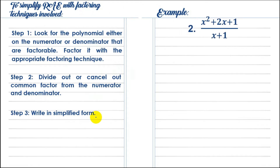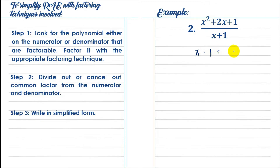For example number 2, we have x squared plus 2x plus 1 all over x plus 1. We check which is factorable. Looking at the numerator x squared plus 2x plus 1 — is this a Perfect Square Trinomial (PST)? The square root of x squared is x, and the square root of 1 is 1. Their product is x, and twice that is 2x, which matches the middle term. So this is a PST.